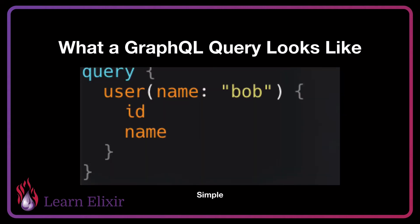This is what a GraphQL query looks like, and you can see that it's quite simple. Essentially, we have our query with a user object that we're pulling back, and we're passing an argument because we want the name to be Bob, and from that user we're pulling off the ID and the name. This is very simple and very expressive.